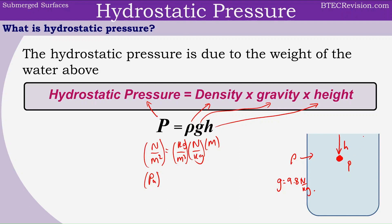So if we take another object and submerge it further, at a greater height h2, it's going to experience a greater pressure — greater than before, because if we increase the height, gravity is a constant, density is a constant, so the only thing that can change is the pressure. So the pressure is going to increase.